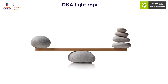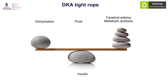Overall, management of DKA involves a tight rope in terms of balance — giving fluids that are not too little to avoid dehydration, nor too much to cause cerebral edema or metabolic acidosis. Similarly, insulin should not be too little so as to prolong recovery, nor cause a rapid fall. Slow correction may mean a longer recovery but will definitely avoid complications like cerebral edema or metabolic acidosis. The mantra of DKA management is slower correction of fluid with lower doses of insulin.